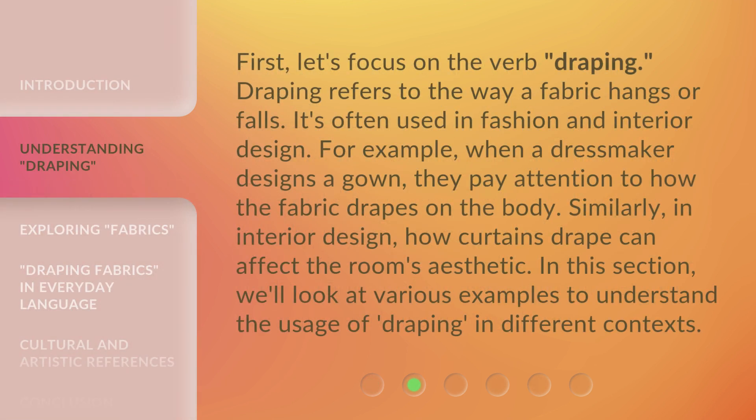First, let's focus on the verb draping. Draping refers to the way a fabric hangs or falls. It's often used in fashion and interior design. For example, when a dressmaker designs a gown, they pay attention to how the fabric drapes on the body. Similarly, in interior design, how curtains drape can affect the room's aesthetic. We'll look at various examples to understand the usage of draping in different contexts.